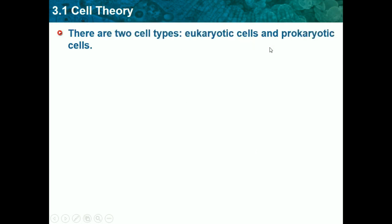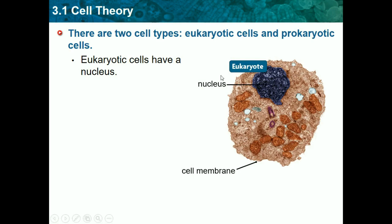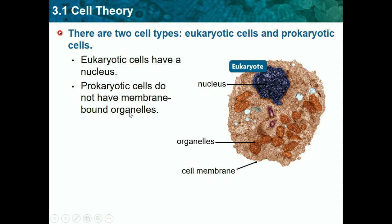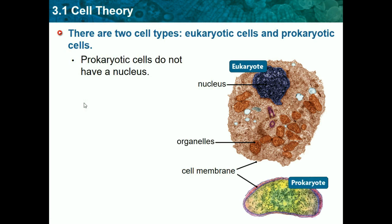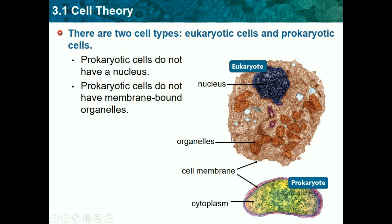The two types of cells are eukaryotic and prokaryotic. Eukaryotic — think of the 'U' as 'you' — these are complex cells with a nucleus and membrane-bound organelles, like the colorful structures you see inside the cell diagram. Prokaryotic cells do not have a nucleus or membrane-bound organelles — 'pro' sounds like 'no,' so remember: no nucleus. You can see the difference: prokaryotic cells don't have anything on the inside — no nucleus or organelles.